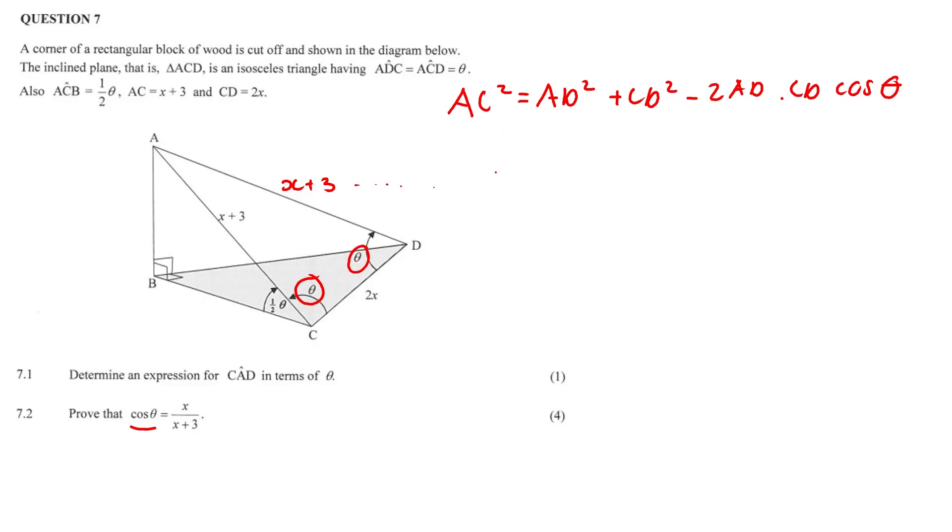And we know that AC is equal to AD, so now we can start subbing in. So AC is x plus 3 squared, which is equal to x plus 3 squared. AC and AD are the same. CD, so plus now 2x squared. And just fill the rest in: 2x again and our x plus 3 cos theta.